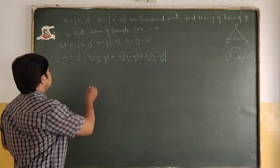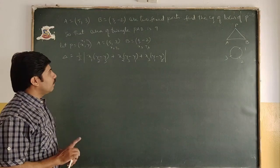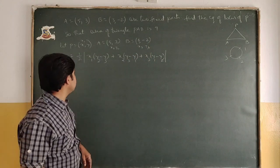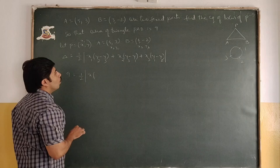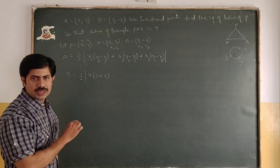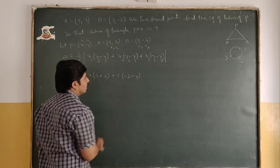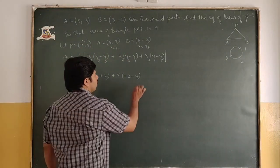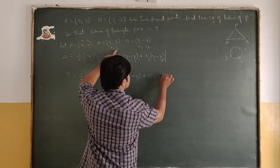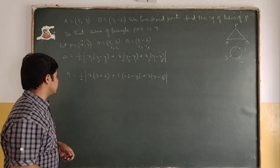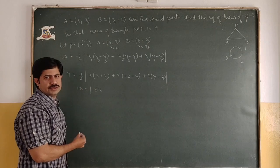Since area = 9, we write: 9 = ½|x(y₂-y₃) + x₂(y₃-y) + x₃(y-y₂)|. Substituting A=(5,3) and B=(3,-2): 9 = ½|x(3-(-2)) + 5((-2)-y) + 3(y-3)|. That is 9 = ½|5x + 5·(-2-y) + 3(y-3)| = ½|5x - 10 - 5y + 3y - 9|.